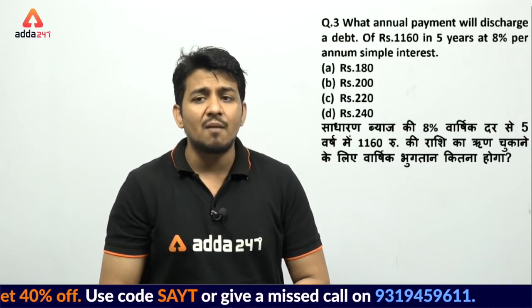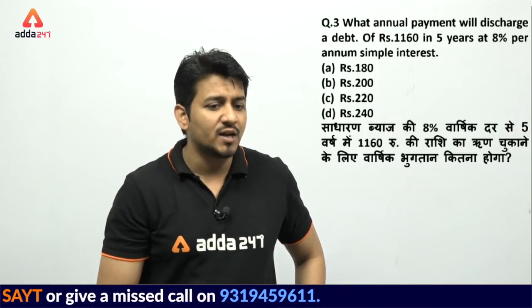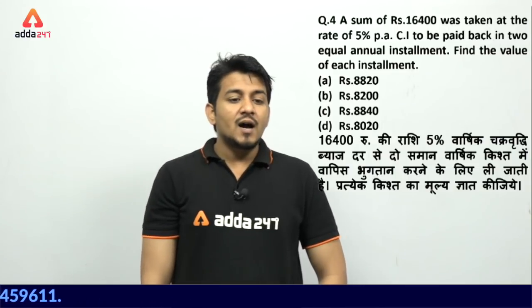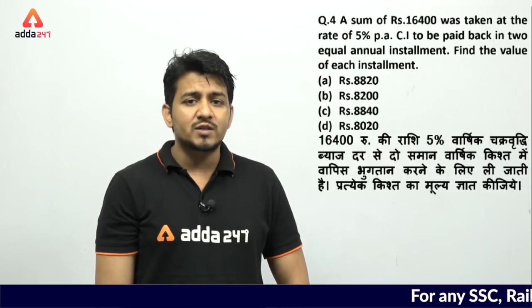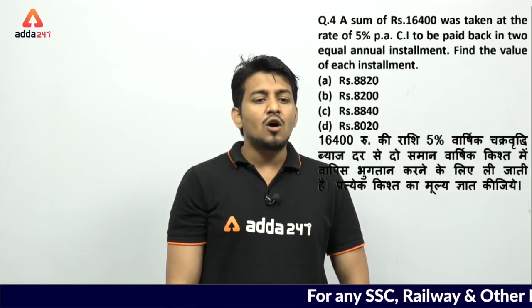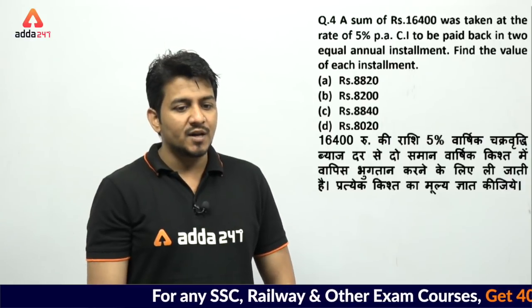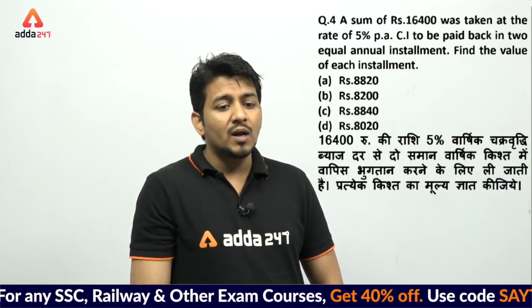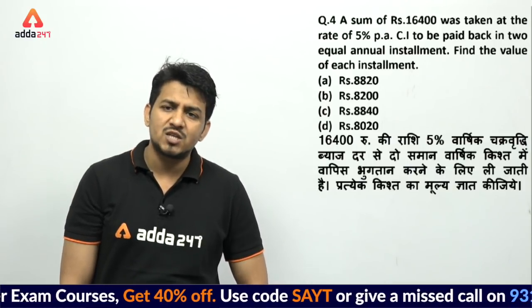Now let's move to compound interest installments. Computer ji, next question. Rs. 16,400 was taken at the rate of 5% per annum compound interest to be paid back with 2 equal annual installments. Find the value of each installment.